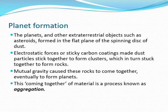Planets, asteroids, and other objects are also formed in a similar way - gravity pulls together small parts of dust, and electrostatic forces make them stick together to form clusters, then rocks, which then have gravitational forces between each other, eventually forming planets. This whole process is known as aggregation.